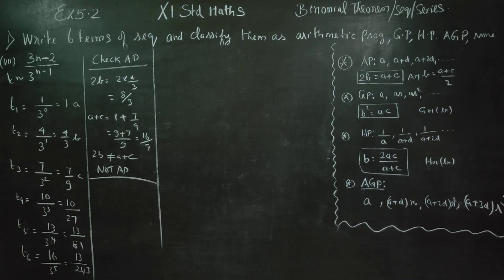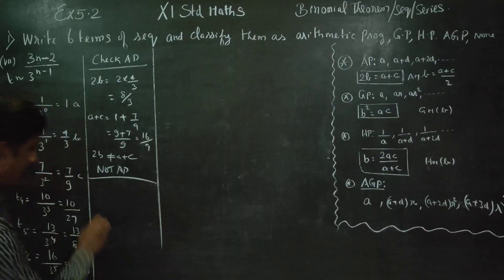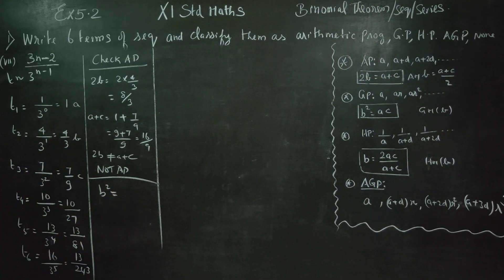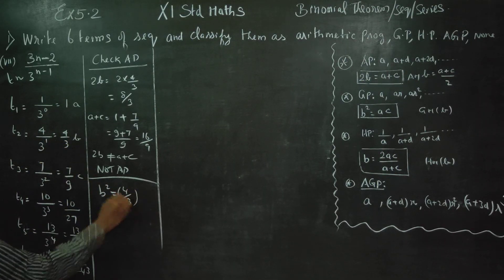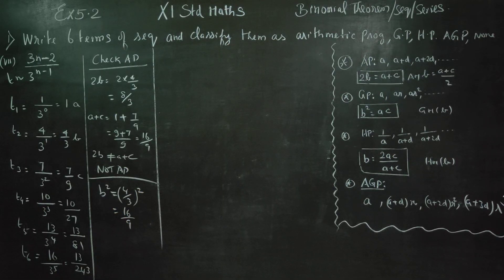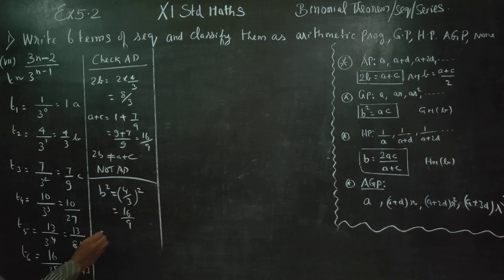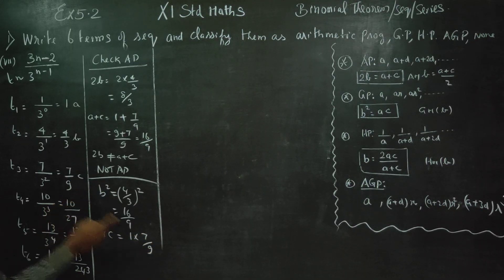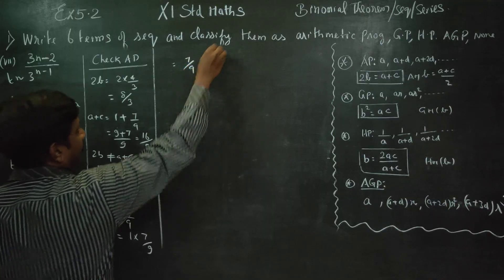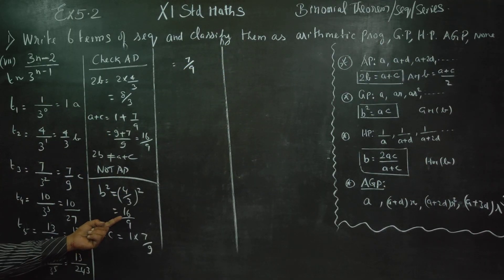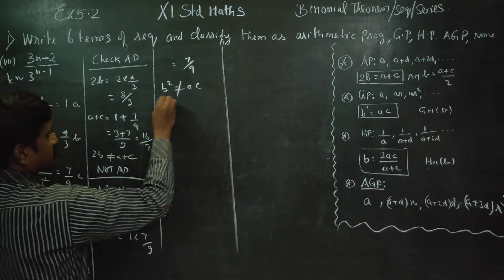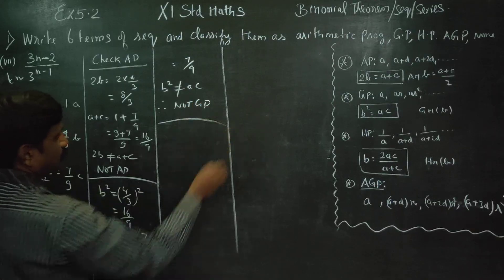Next, we check for GP. The condition is B² = A×C. B² = (4/3)² = 16/9. A×C = 1 × 7/9 = 7/9. Since 16/9 ≠ 7/9, B² is not equal to A×C. Therefore, it is not a GP.